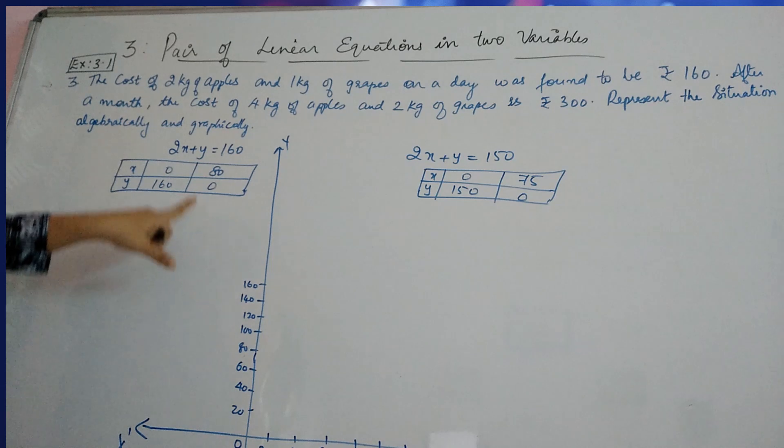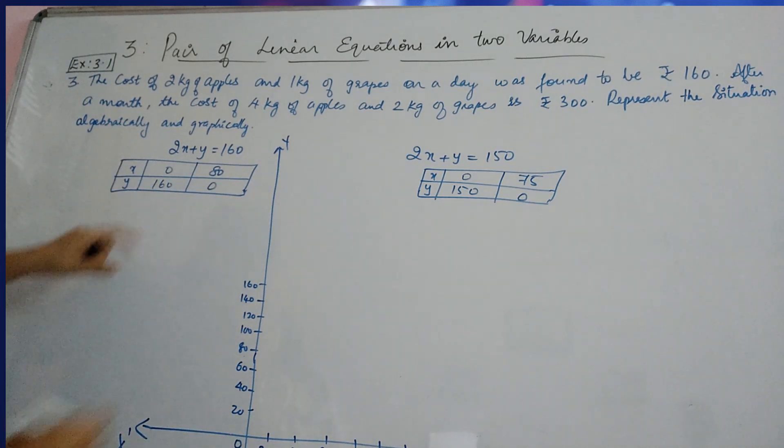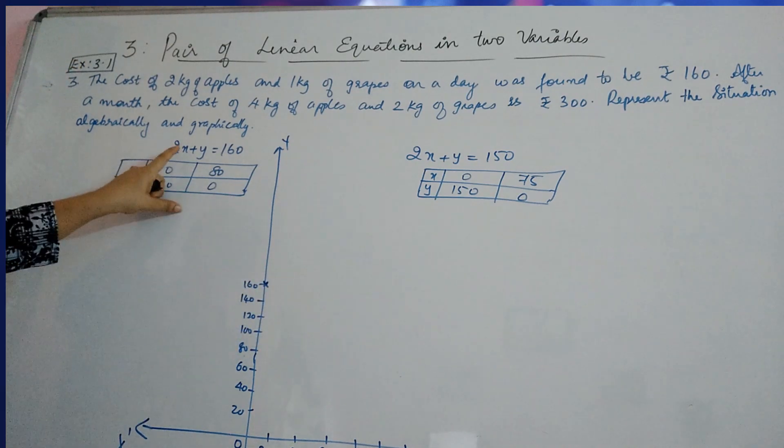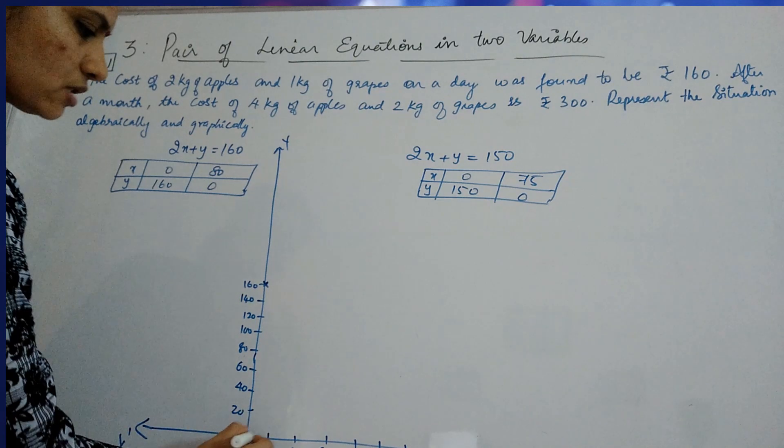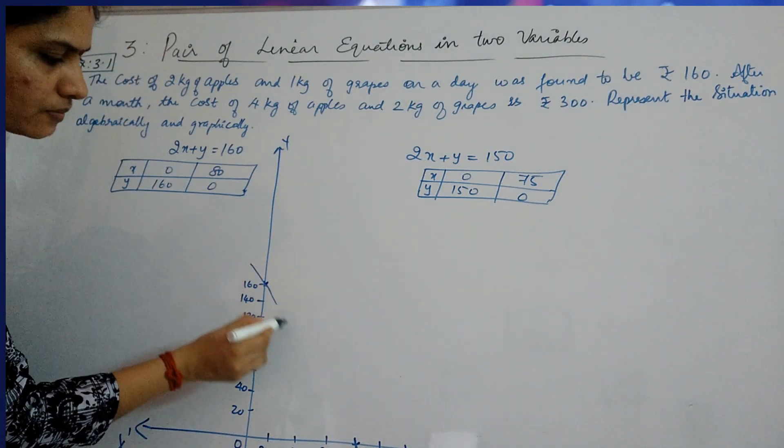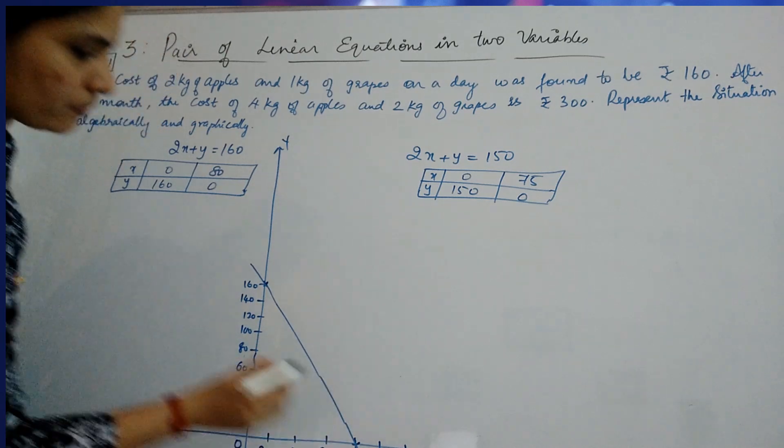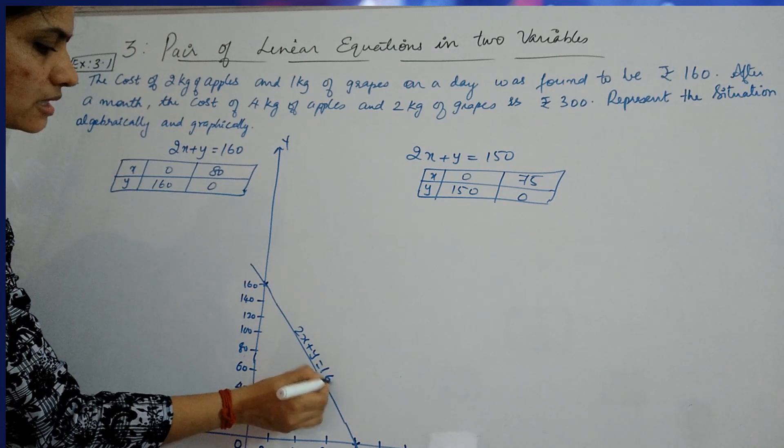Now, by going for the values, you will get when X is 0 will have Y as 160. So, this is the point for your first one. And when Y is 0, X is 80. Y is 0, X is 80. So, you just join these two.